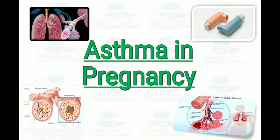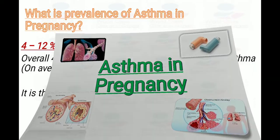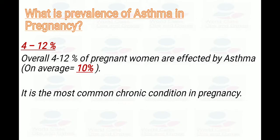Bismillahirrahmanirrahim. The topic of our discussion today is asthma in pregnancy, and I have taken help from the TOGS article about asthma in pregnancy. The prevalence of asthma in pregnancy, as written in the TOGS article, is 4 to 12 percent. Overall, 4 to 12 percent of pregnant women are affected by asthma, on average 10 percent. It is the most common chronic respiratory condition in pregnancy.